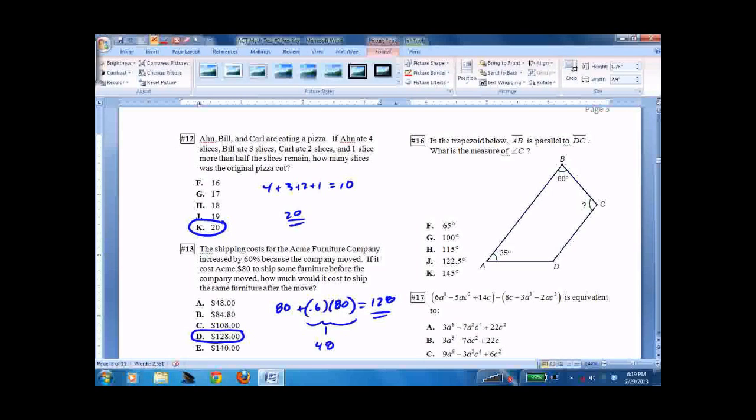Number 16, trapezoid below. If you don't know, trapezoids are parallel lines. And this angle plus this angle equals 180. They want the angle C there. So x equals 100. Done.